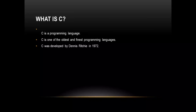C is a programming language. It is one of the programming languages and it is the oldest, developed in 1972 by Dennis Ritchie. C is the oldest and finest programming language, developed by Dennis Ritchie in 1972.